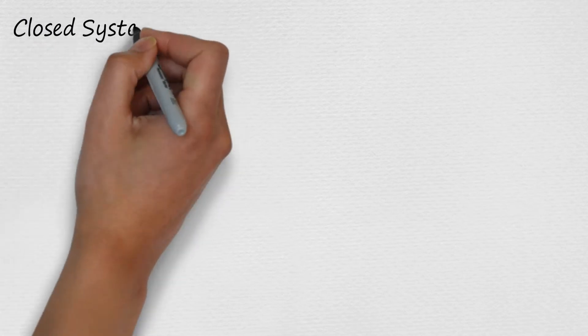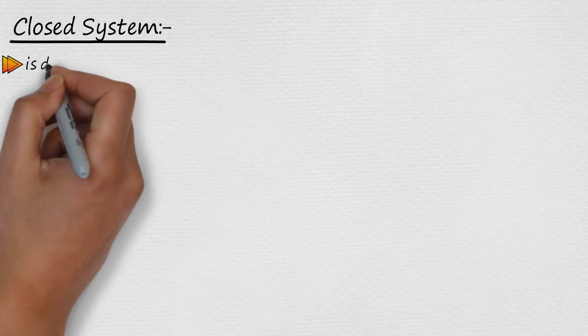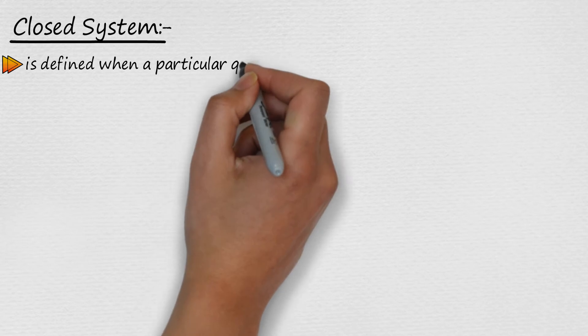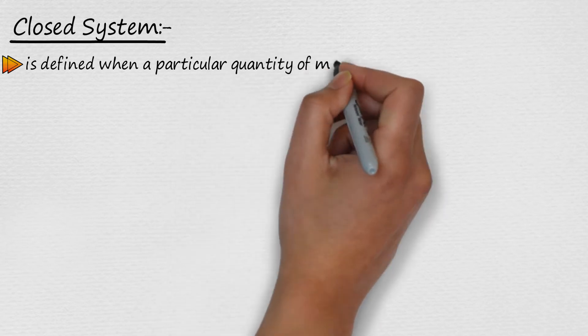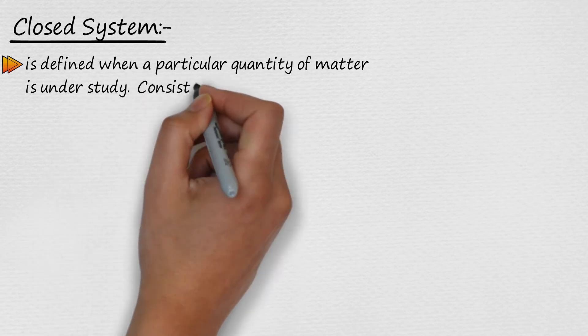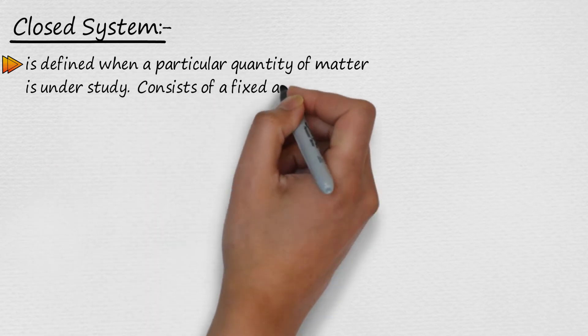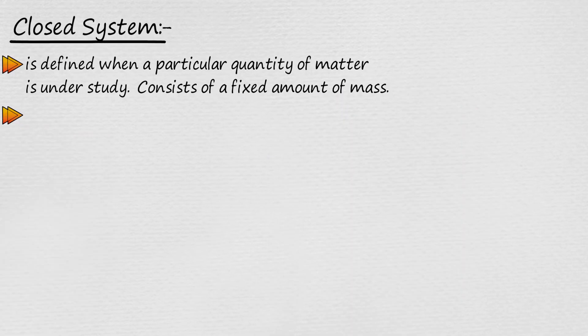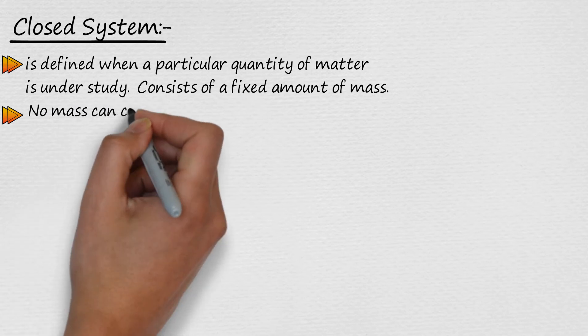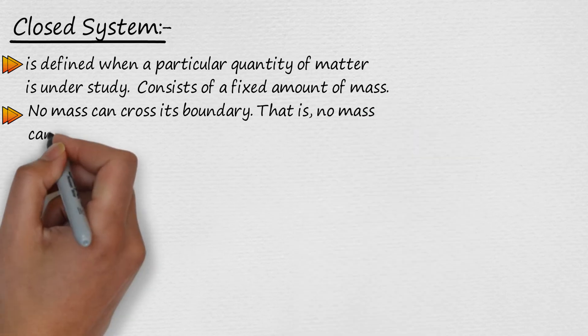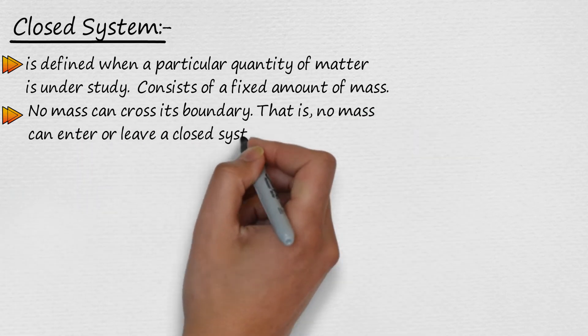Let's see closed system first. A closed system is defined when a particular quantity of matter is under study. A closed system always contains the same matter. It is consisting of fixed amount of mass. In closed system no mass can cross its boundary. It means no mass can enter or leave a closed system.